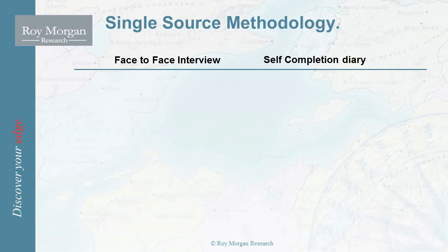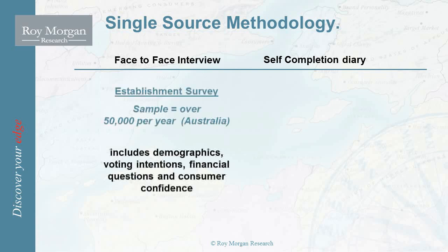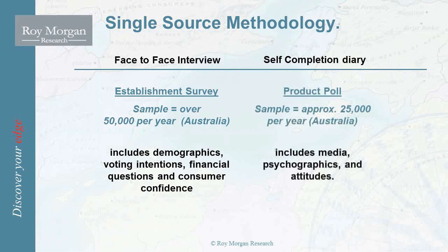Here we have the single source methodology. First of all, on the left-hand side, you can see we have the face-to-face interviews. This is the establishment survey. There are over 50,000 per year in Australia. Over on the right-hand side, you can see a self-completion diary. This is the product poll. And we have a sample size of approximately 25,000 per year in Australia.